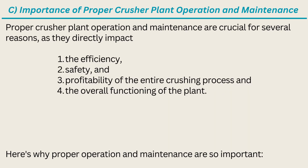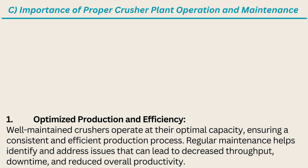C. Importance of Proper Crusher Plant Operation and Maintenance. Proper crusher plant operation and maintenance are crucial for several reasons, as they directly impact the efficiency, safety, and profitability of the entire crushing process and the overall functioning of the plant. 1. Optimized Production and Efficiency. Well-maintained crushers operate at their optimal capacity, ensuring a consistent and efficient production process. Regular maintenance helps identify and address issues that can lead to decreased throughput, downtime, and reduced overall productivity.